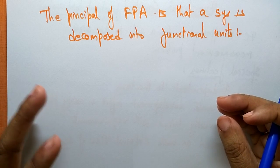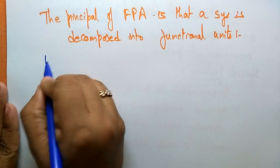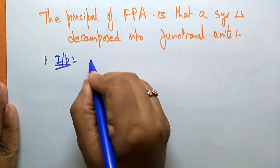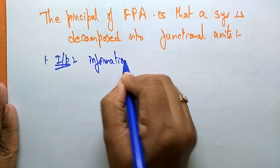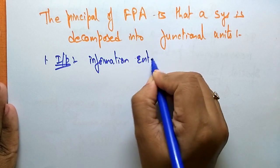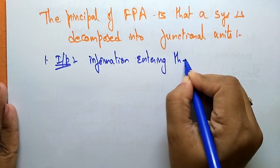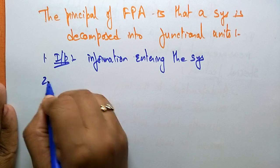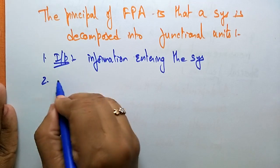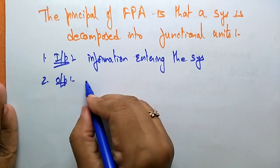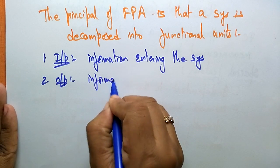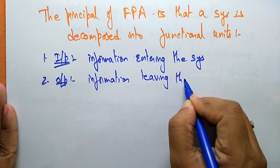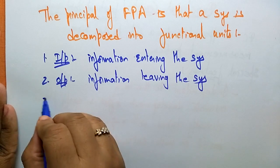The first functional unit is Input — information entering the system. We call it an input when we are entering information into the system. The second is Output — information leaving the system. Information is leaving out from the system.